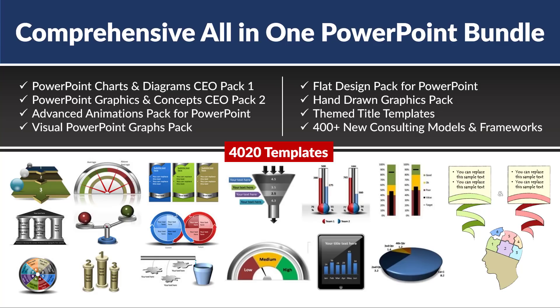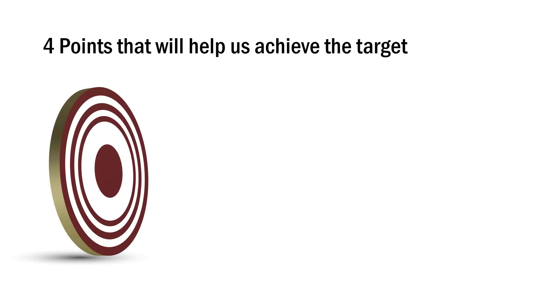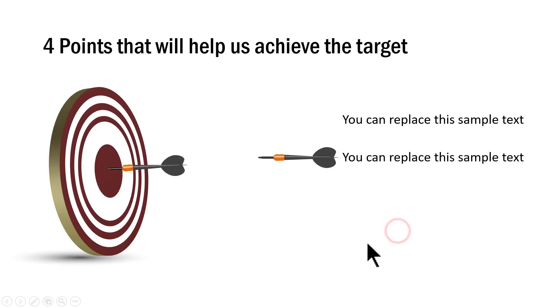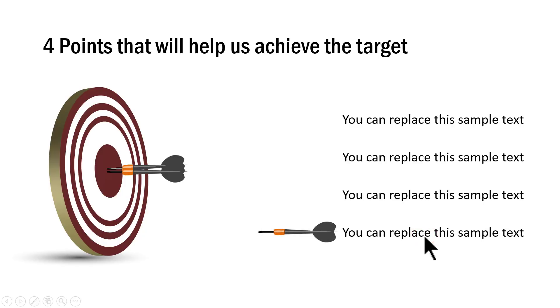Talking about business presentations, one of the wonderful tools you need is the Comprehensive All-in-One PowerPoint Bundle — a collection of more than 4,020 premium PowerPoint templates that allow you to convert any boring text-based slide into a clear and compelling visual slide in minutes. The first template I want to show talks about hitting the target, covering four points. On a click, each option is introduced and hits the bullseye, until all four options hit the bullseye — a very useful concept.